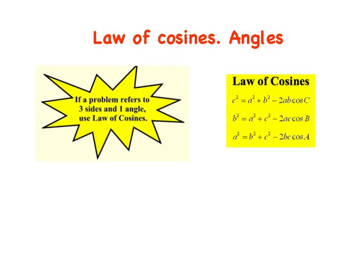Today we're going to focus strictly on finding angles. Yesterday's video was all about finding a side — whether it was a, b, or c. And today we're going to find the angle, which is just a little trickier. So take good notes and keep your calculator handy. I just want to remind you that you use the law of cosines when you have three sides and one angle.